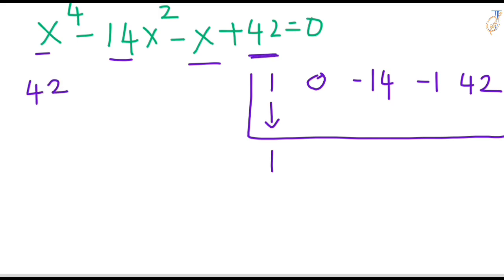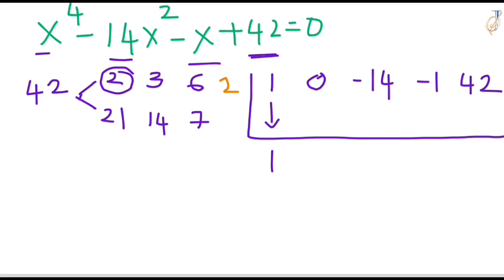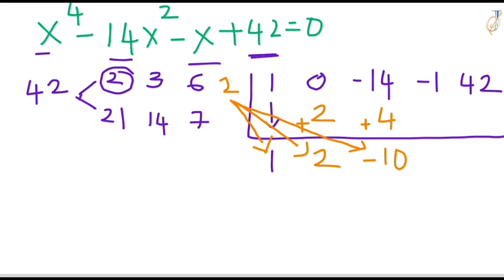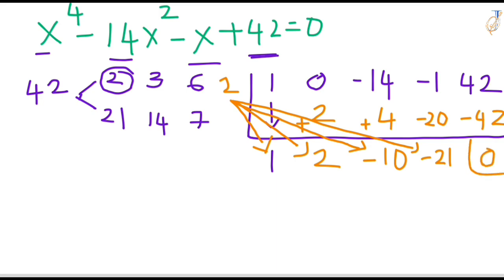The constant value is 42. Find the factors of 42: 2 times 21, 3 times 14, 6 times 7. Take the least factor, which is 2. Bring down the leading 1. Multiply diagonally: 2 times 1 is 2. Add: 0 plus 2 is 2. Continue multiplying and adding through the row. The final remainder is 0, so 2 is a root.